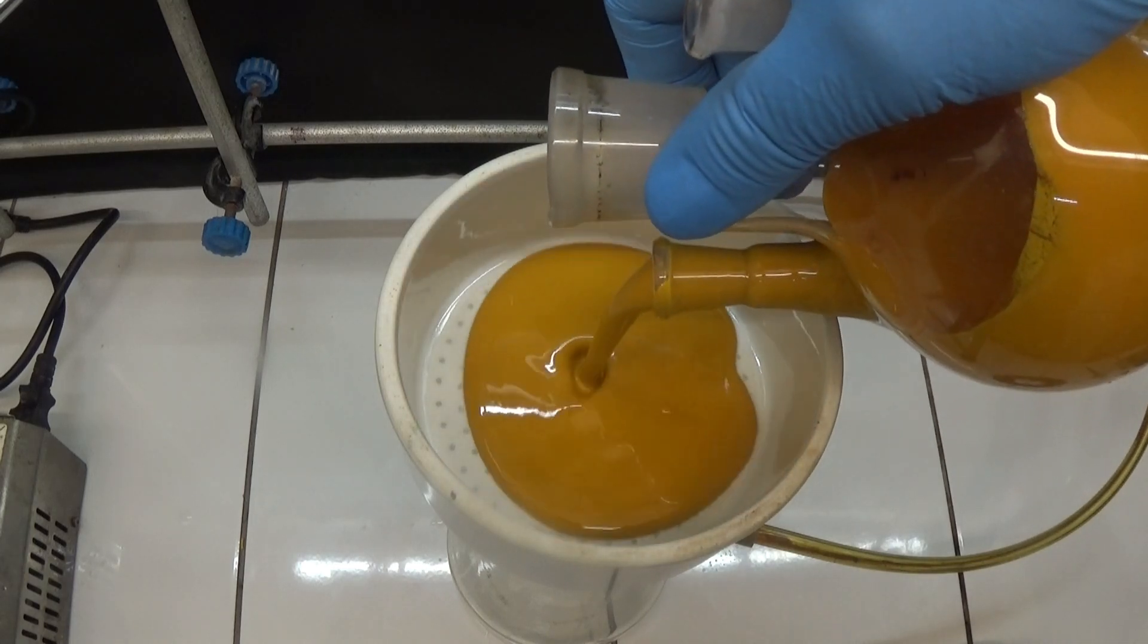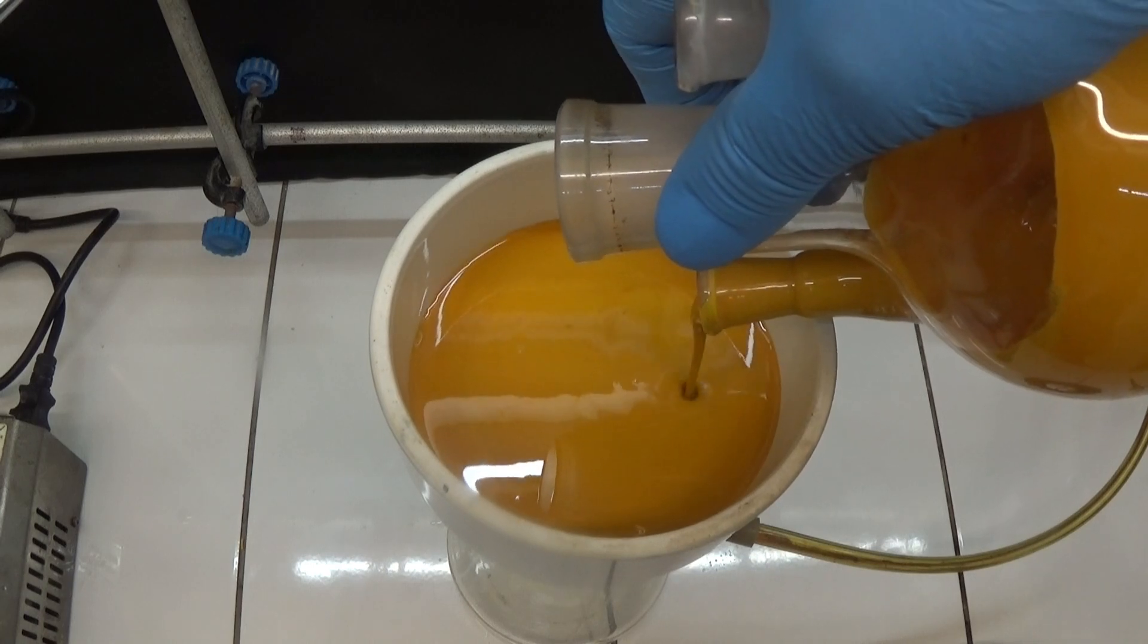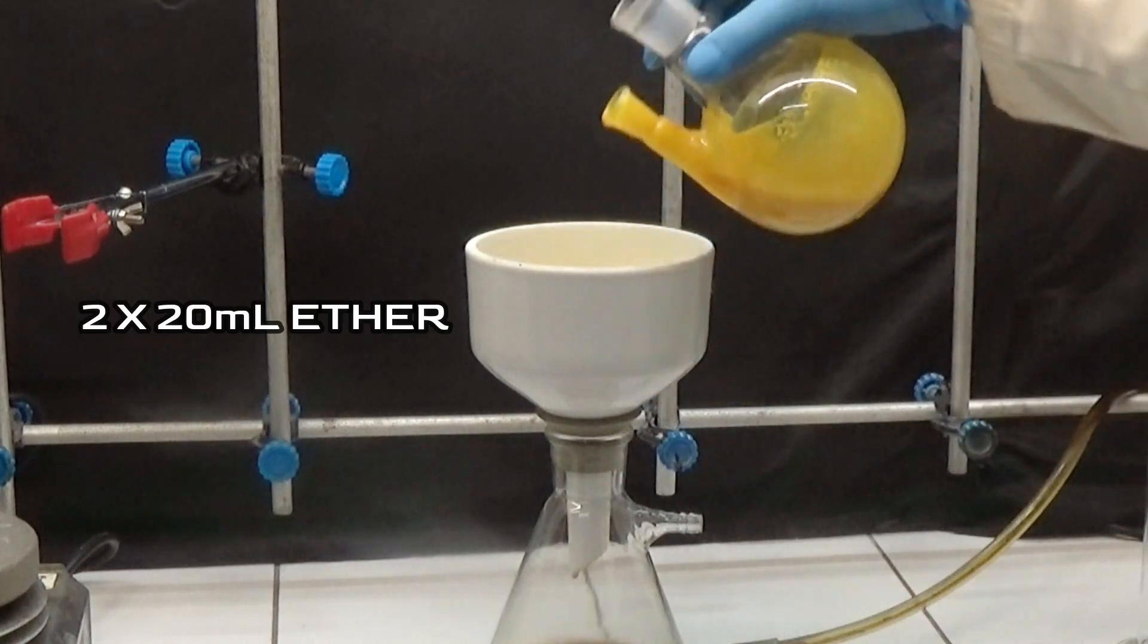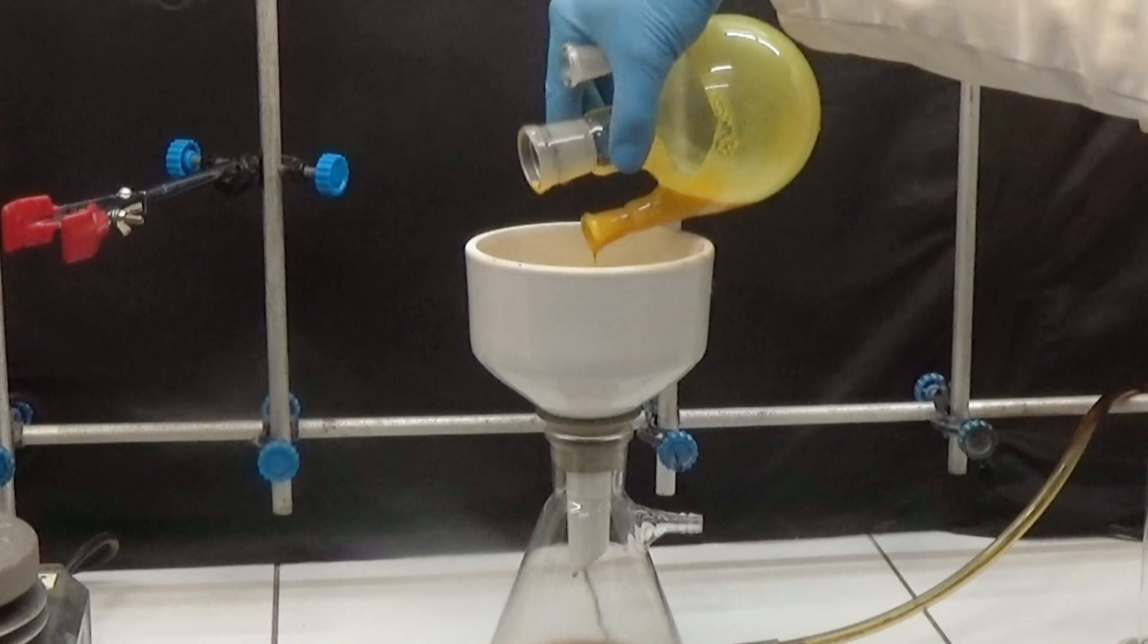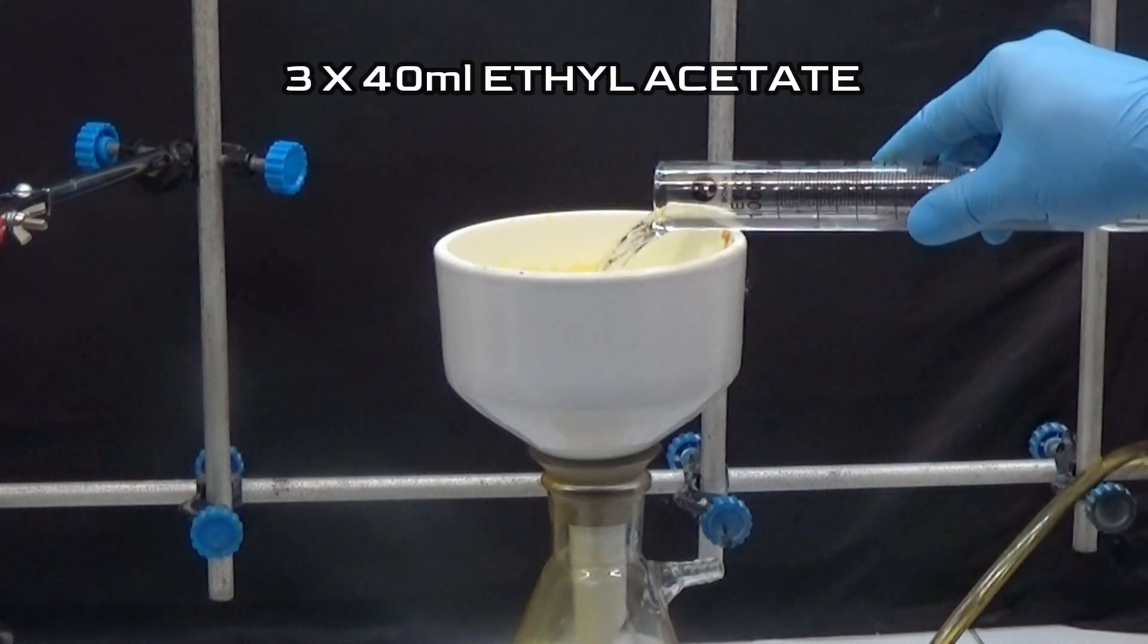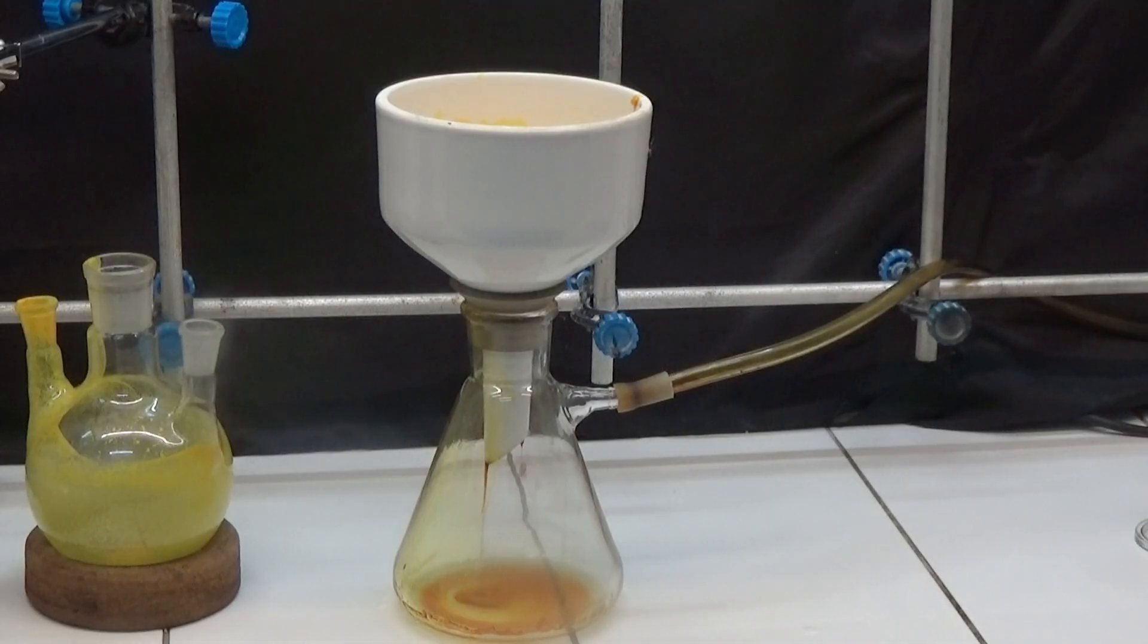Collect the yellow solid by suction into a buchner funnel using filter paper. Wash the flask twice with 20ml of ether and combine it with the solid from the filter. Wash the yellow solid 3 times with 40ml of ethyl acetate and let it dry for a few minutes using suction.